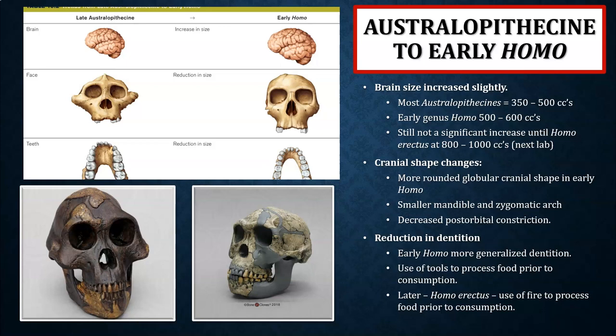The reduction in dentition indicates that genus Homo had a much more generalized diet. Homo habilis and onward utilized more stone tool technologies, processing food prior to consumption, which reduced the demand on the chewing muscles. Also, once we get to Homo erectus and onward, we have the likely control of fire. Cooking food — like eating mashed potatoes versus a raw potato — is much easier on the chewing apparatus, reducing wear and tear on the dentition and jaw. That's why you don't see features like a sagittal crest in genus Homo.